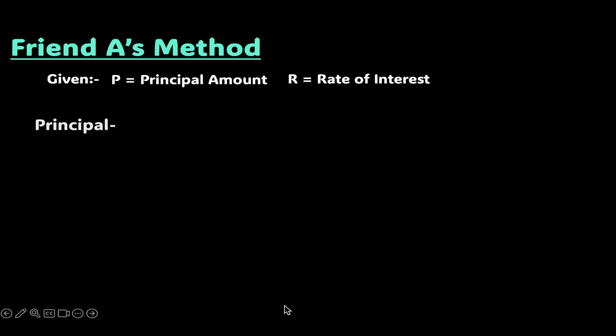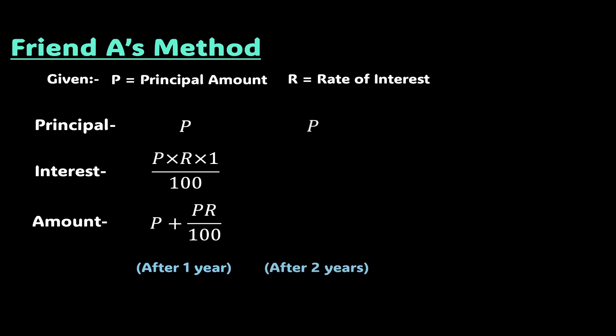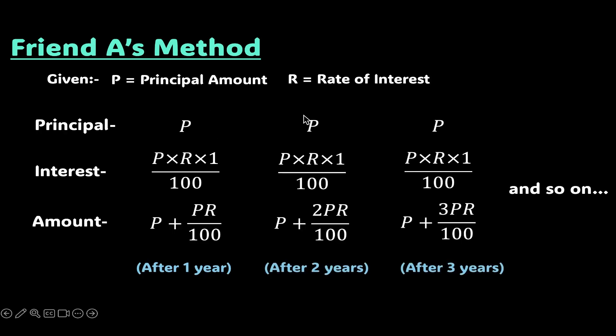Friend B comes up with a different strategy altogether. He noticed that during his calculation, friend A kept the principal amount as you can see here, the same and didn't really change it at all.